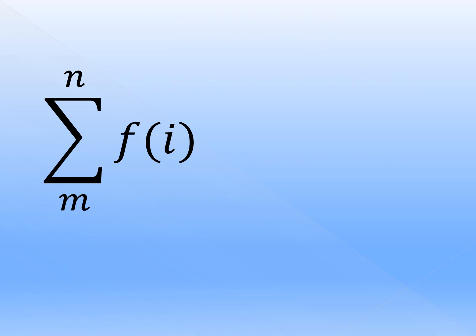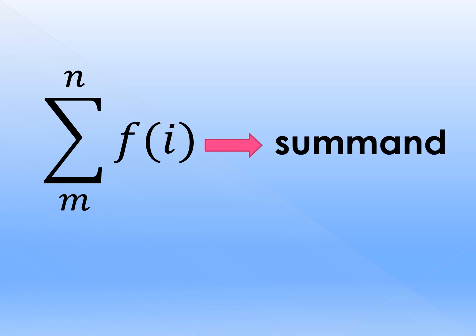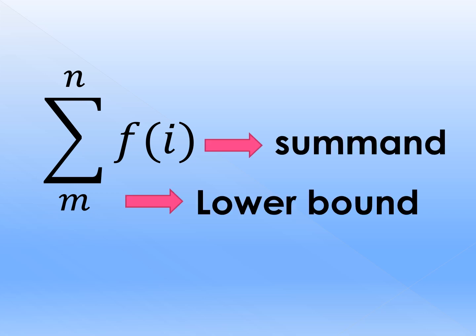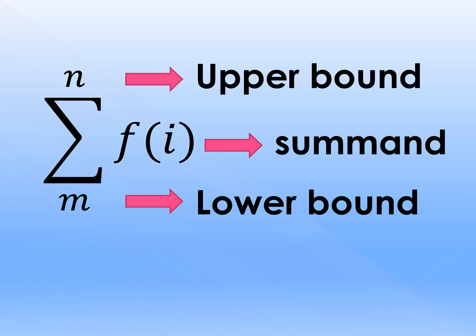This is a representation of sigma notation. We can read this as summation of f of i from m up to n. f of i is what we call the summand, while m is what we call the lower bound, and n is what we call the upper bound.